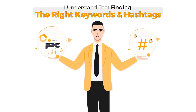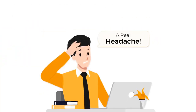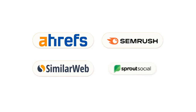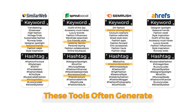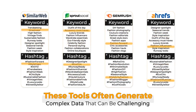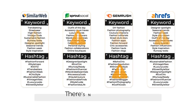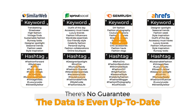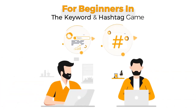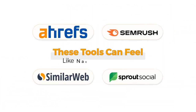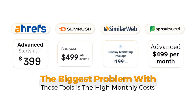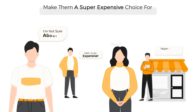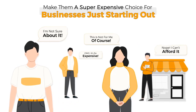Finding the right keywords and hashtags can be a real headache. Even with tools like Ahrefs, SEMrush, SimilarWeb, and Sprout Social, it's not a walk in the park. These tools often generate complex data that can be challenging to decipher, and there's no guarantee the data is even up to date. For beginners, these tools can feel like navigating a maze — and the biggest problem is the high monthly costs that make them a super expensive choice for businesses just starting out.